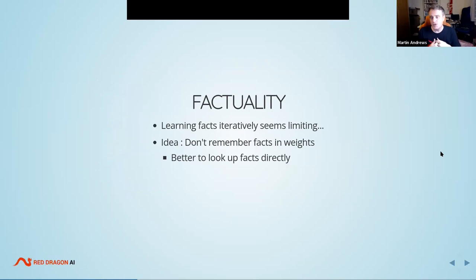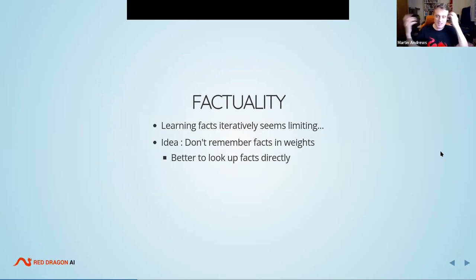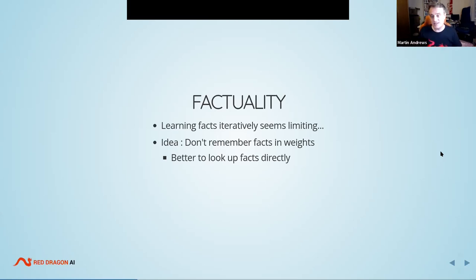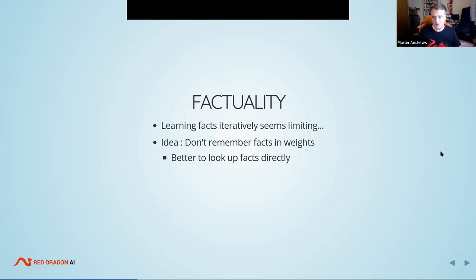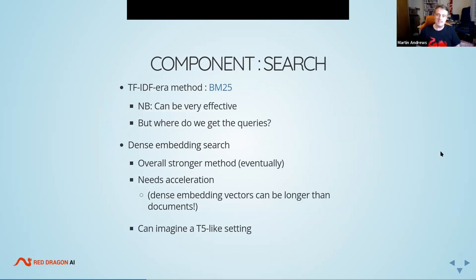I'm less interested in the biggest model and more interested in the best model. One key issue around factuality is that it seems limiting to learn facts by gradient descent. If a model needs to learn facts, why store them in floating-point weights? The newer idea is: don't remember facts in the weights — that seems crazy — better to look the facts up directly. If you could have a book open and let the model look in it, that would be far better than remembering all knowledge in the weights.